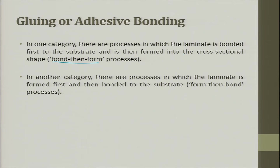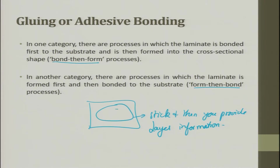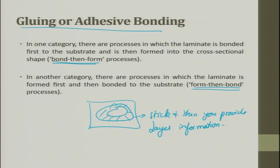A further classification is possible within these processes. In one category, the laminate is bonded first to the substrate and then formed into cross-section shapes — bond then form. The other category is form then bond: you give the shape and layer information first, then stick it. Both categories are allowed, and it need not always be bond-then-form; form-then-bond is also possible.